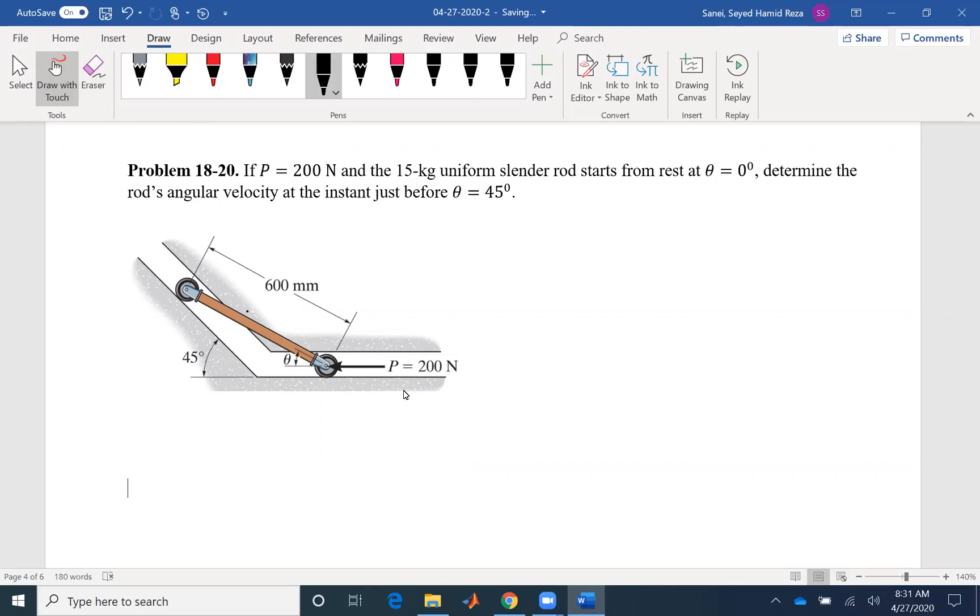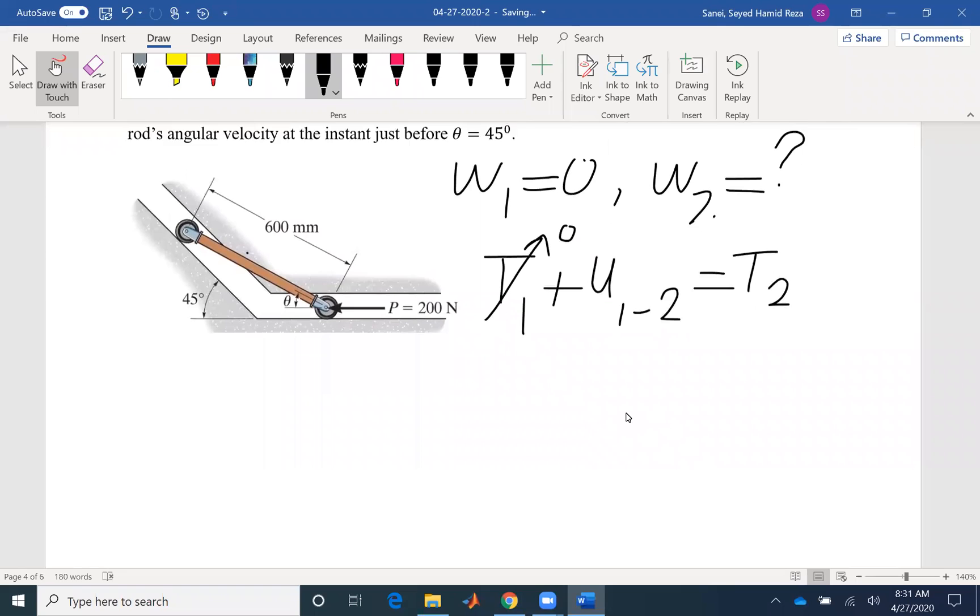Let's write our known values and unknown values. We know the initial angular velocity would be zero. The final angular velocity is unknown. We are going to use work-energy, so the initial kinetic energy plus the work that is done on the sample would be equal to the final kinetic energy. The initial kinetic energy would be zero as omega one is zero.